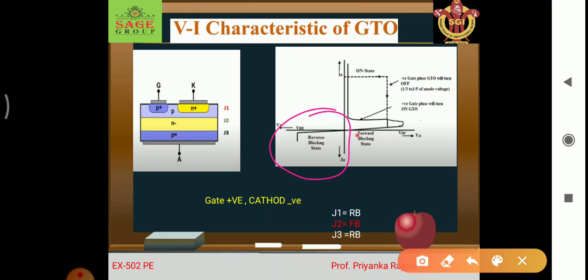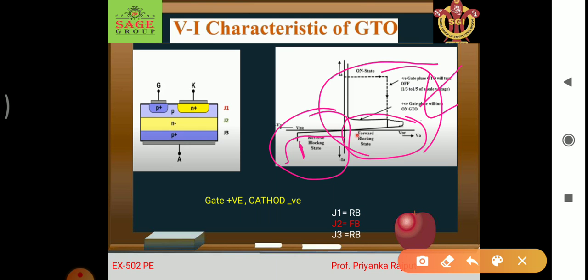In the VI characteristic, one region is the reverse blocking mode. In reverse blocking mode, a small leakage current flows, and at a certain voltage the current drops out entirely. As we increase the gate voltage, the characteristic curve shifts and the GTO enters proper conduction.